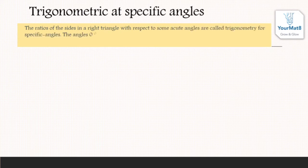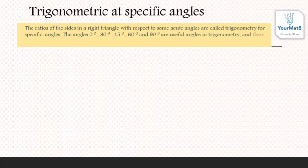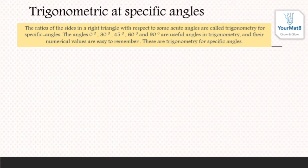The angles 0 degrees, 30 degrees, 45 degrees, 60 degrees, and 90 degrees are useful angles in trigonometry, and their numerical values are easy to remember. These are trigonometry for specific angles. The table given below is necessary to learn.